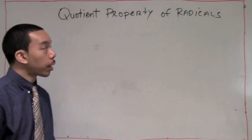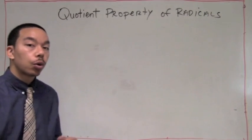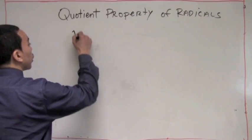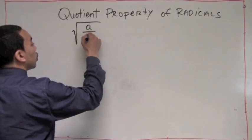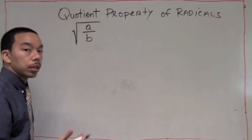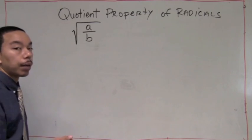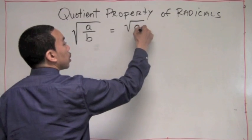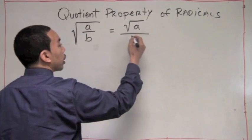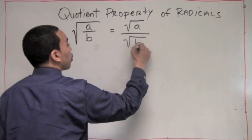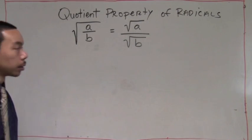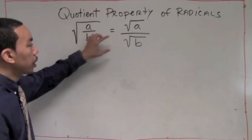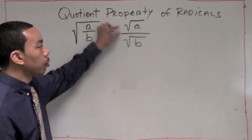After discussing the product property of radicals, we can now look at the quotient property of radicals. The quotient property states that if we have a radical with a quotient A divided by B in the radicand, we can rewrite this as the square root of A over the square root of B — separating it into two radicals.